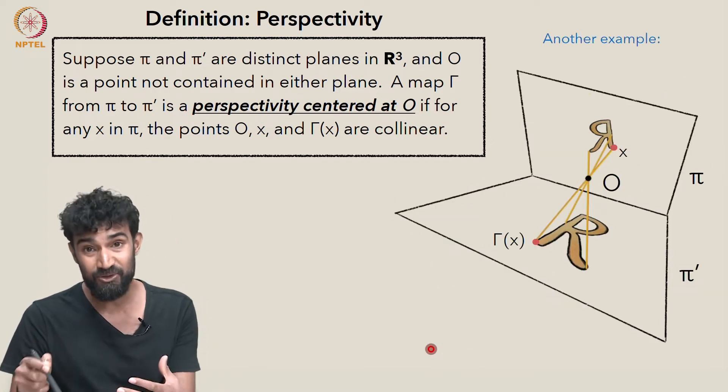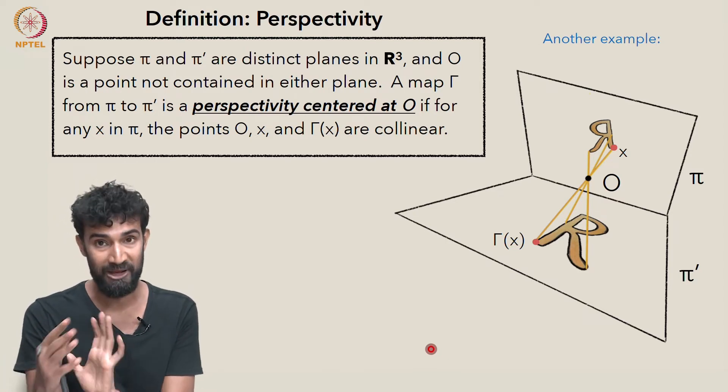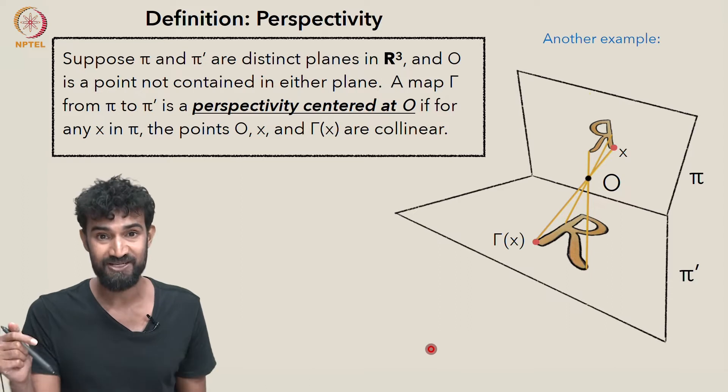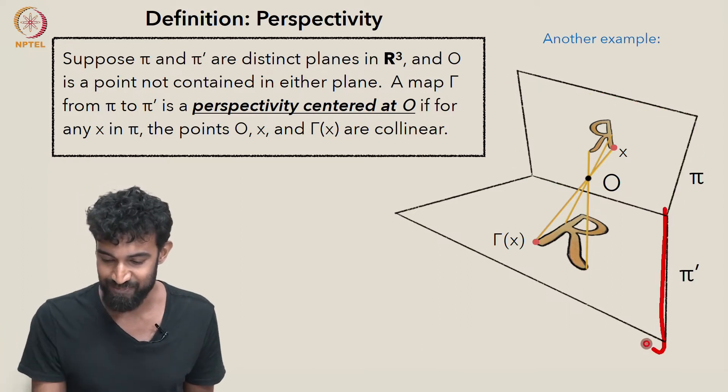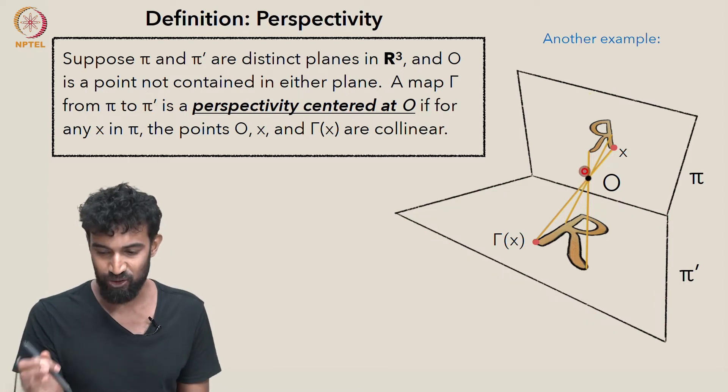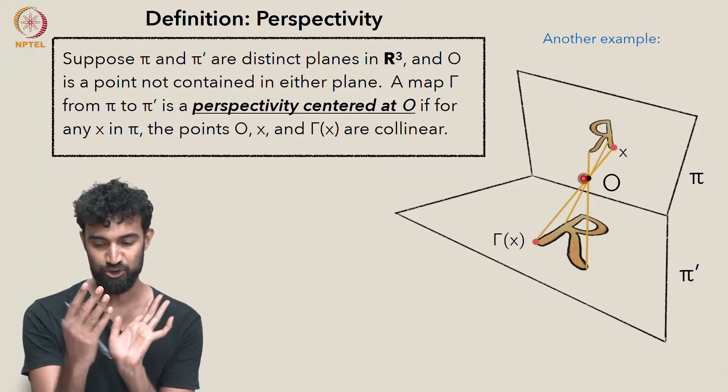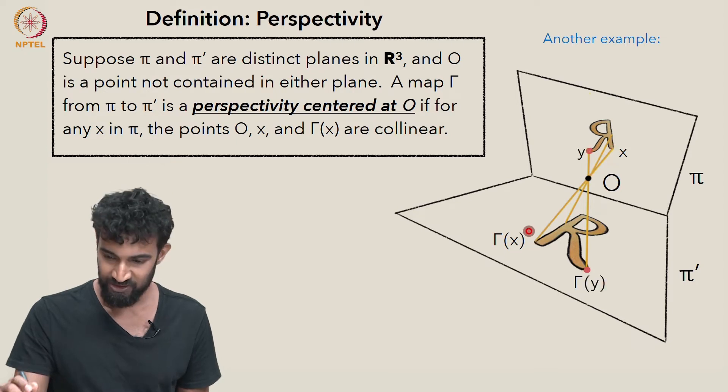Let's see another example of a perspectivity, where the planes and the point are arranged in a slightly different way in space. Over here, π is this plane, π' is this plane, and O is centered here between the two planes. In this case, we see that x, O, and γ(x) are collinear, y, O, and γ(y) are collinear, and this point z, O, and γ(z) are collinear.